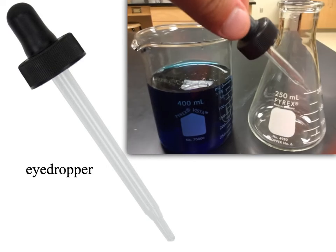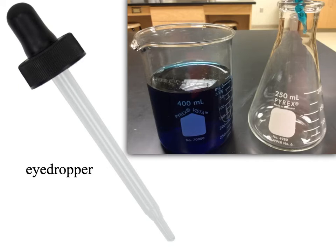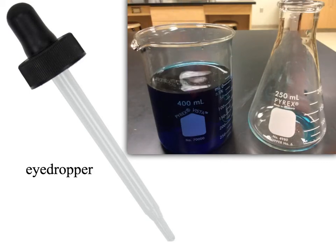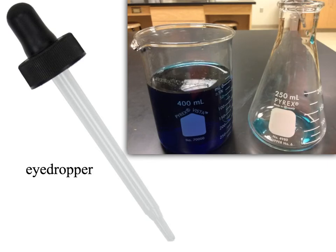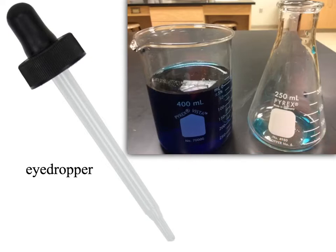The next piece of equipment is an eyedropper. Their function is to transfer liquids from one container to another — just like you might use a turkey baster. You squeeze the air out, insert it into the liquid, release the pressure so the liquid goes up, move it to the next container, and release. Quick review: the container I'm taking liquid from is a beaker, and the container I'm putting it into is an Erlenmeyer flask.